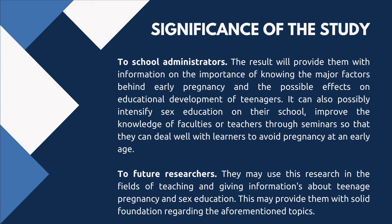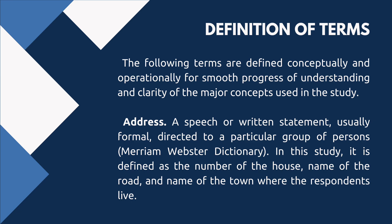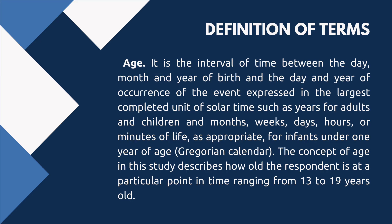Definition of terms: The following terms are defined conceptually and operationally for smooth progress of understanding and clarity of the major concepts used in the study. Address: a speech or written statement, usually formal, directed to a particular group of persons (Merriam-Webster Dictionary). In this study, it is defined as the number of the house, name of the road, and name of the town where the respondents live. Age: the interval of time between the day, month, and year of birth and the day and year of the event, expressed in the largest completed unit of solar time.